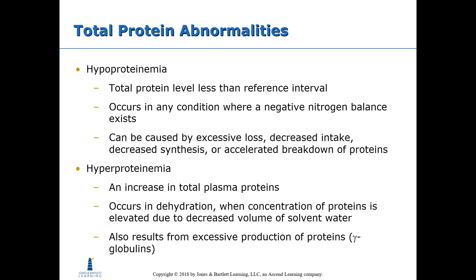Abnormalities related to total protein: hypoproteinemia means less protein. If total protein levels are low, this can occur in any condition where there is a negative nitrogen balance — caused by excessive loss of proteins, decreased intake of proteins, decreased synthesis of protein, or accelerated breakdown of protein.